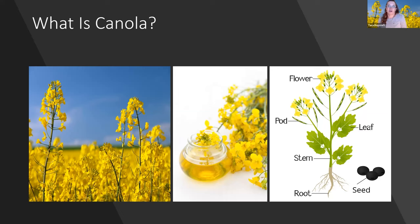So we're going to talk a little bit about what is canola to begin with. You can see here we've got an image of a canola plant with the different parts — the flower, pods, leaves and stems, roots and seeds. Off to the left-hand side of the screen is the beautiful yellow golden canola flower, as you've all probably seen driving along in the countryside.